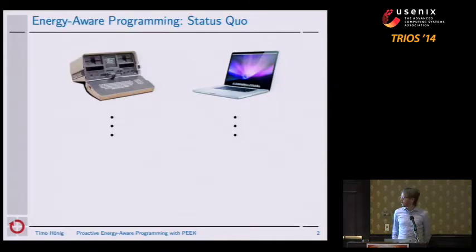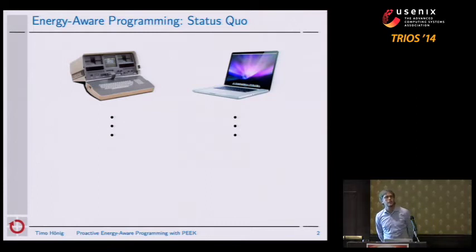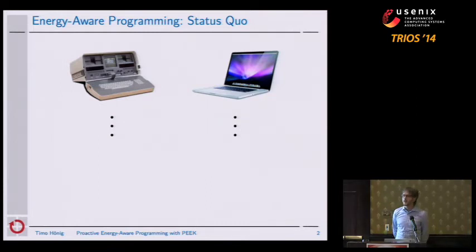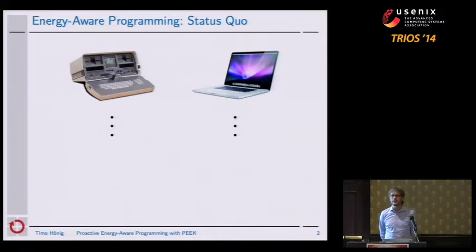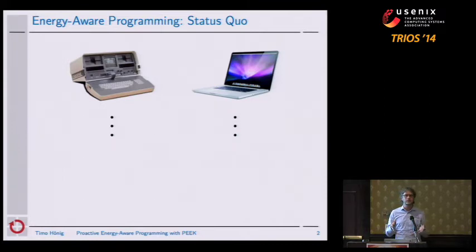As a motivation, let's have a look at two mobile systems. The one on the left was actually the first mobile computing system available on market. It's an Osborne One. I think it was sold in 1980, 1981, and the advertisement at that time was it's the first mobile system which fits under the front seat of your airplane.